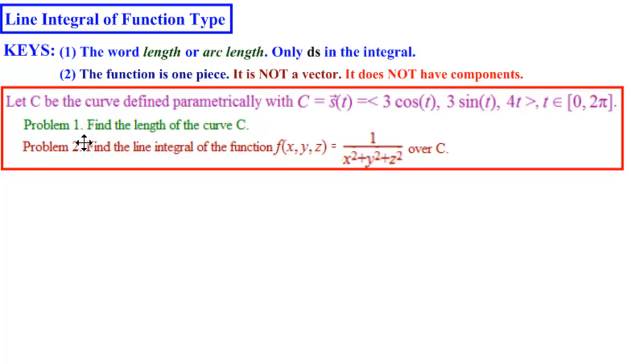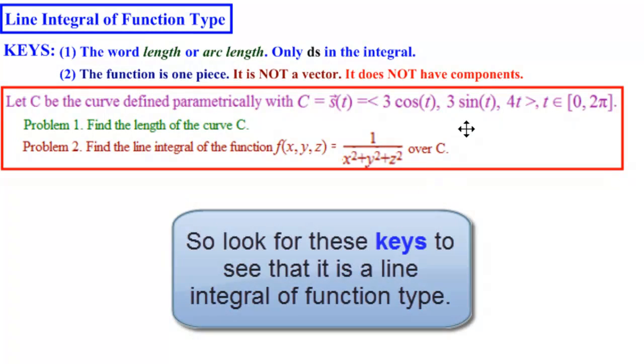Problem one: find the length of the curve c. Problem two: find the line integral of the function 1/(x²+y²+z²) over c. So this is not a vector function. It's just a function. It's one piece. In both of these problems, we have clues that we're working on line integrals of function type.